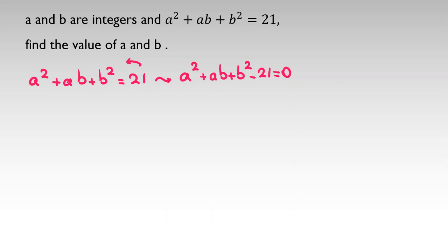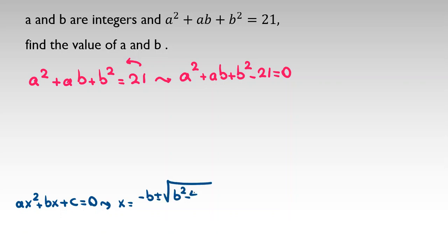Recall that if we have ax squared plus bx plus c equal to zero, then x equals negative b plus or minus the square root of b squared minus 4ac, all over 2a.